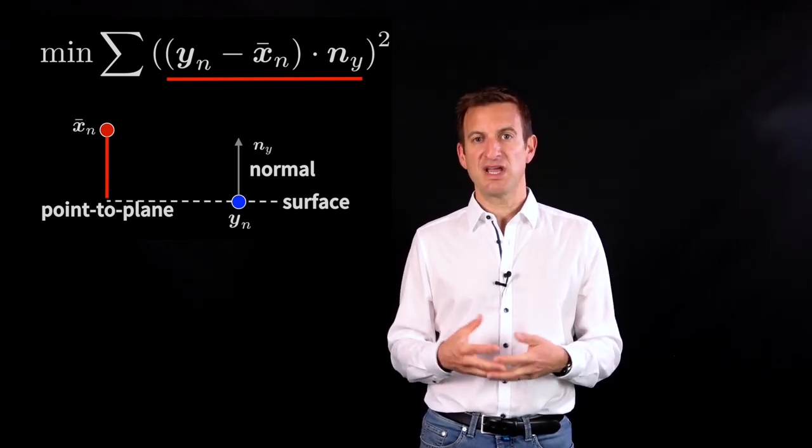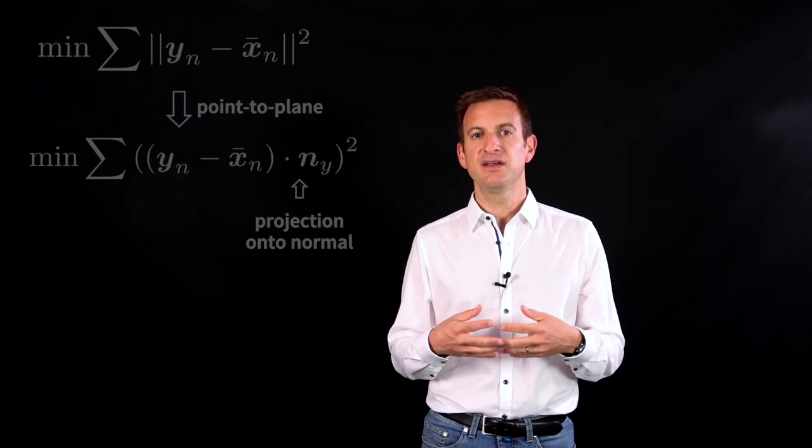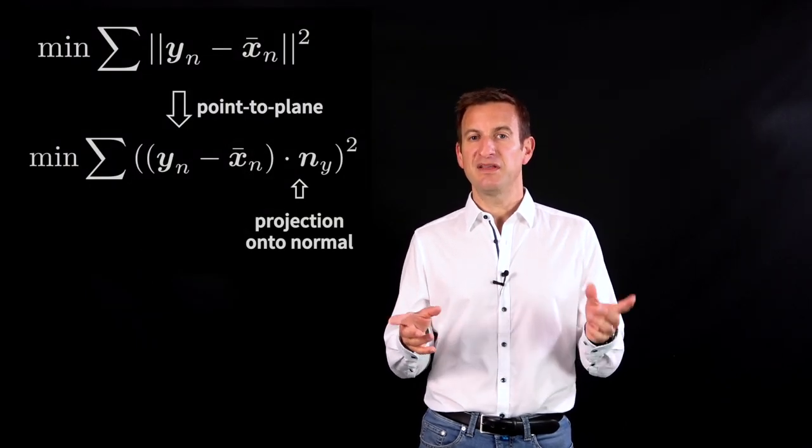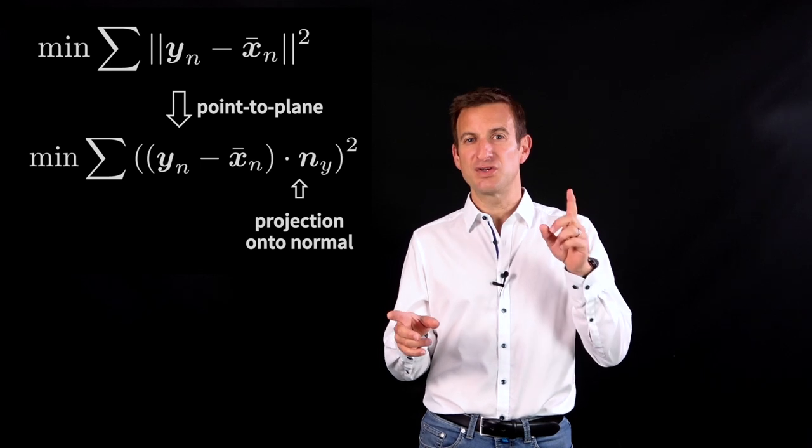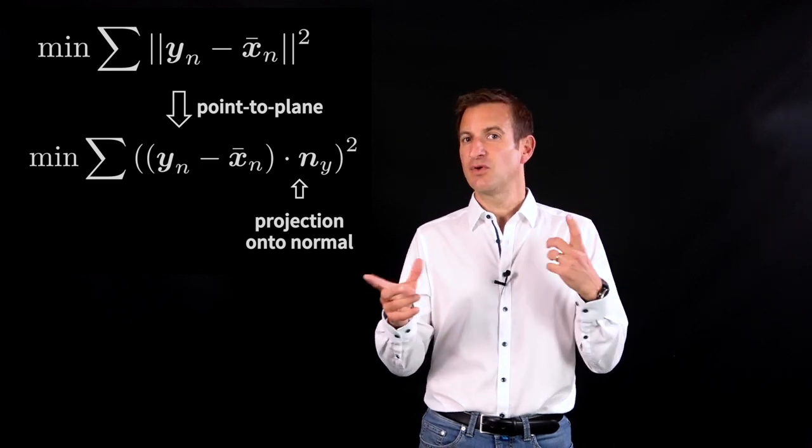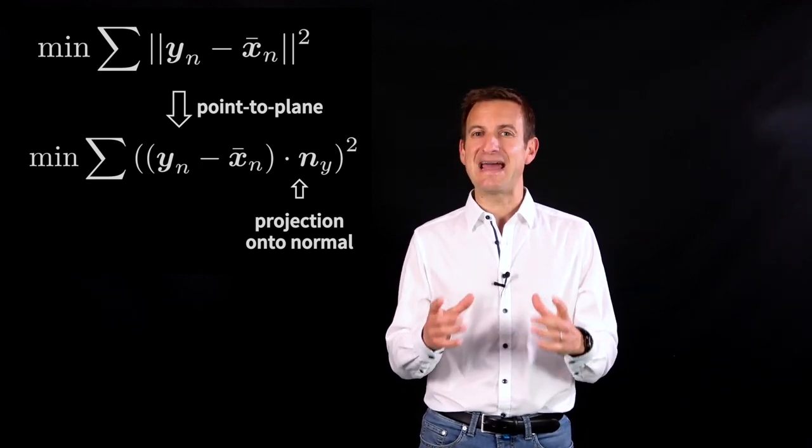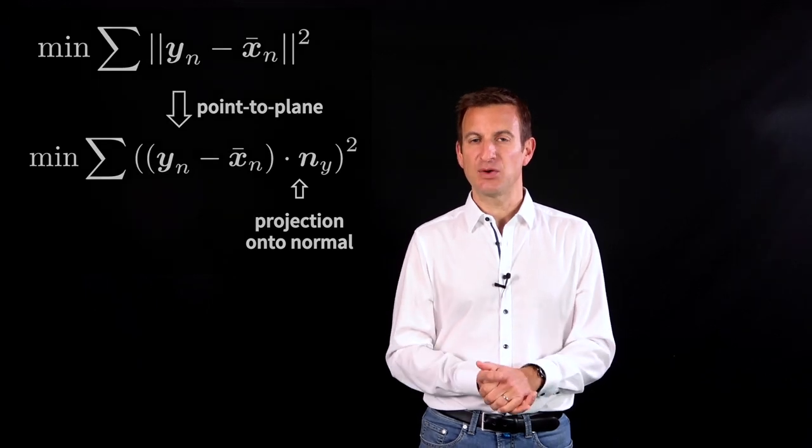It's basically a projection, which mathematically is nothing else than computing a dot product of two vectors. The only thing I'm changing is my cost function so that it's not a Euclidean distance anymore, but the Euclidean distance of a vector which is a projection computed through a dot product.